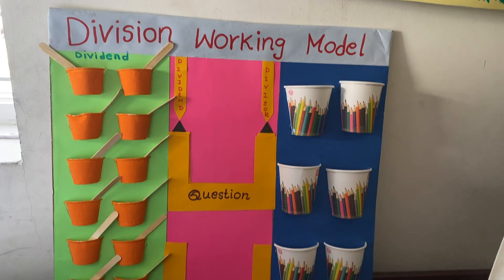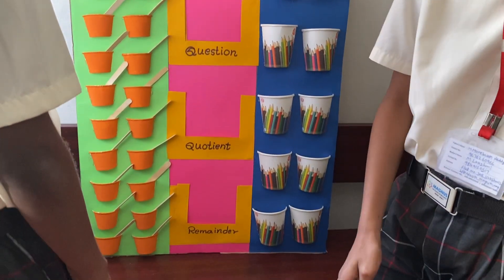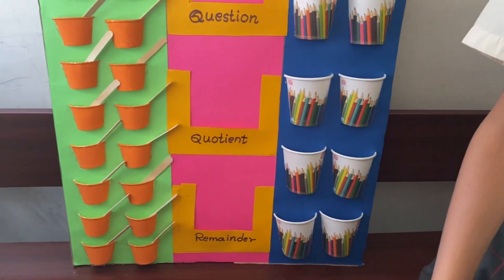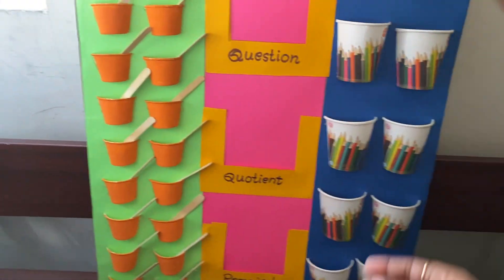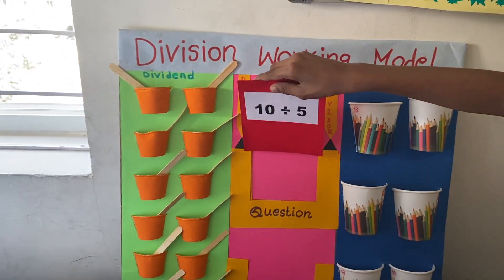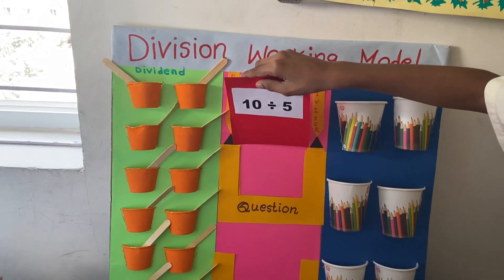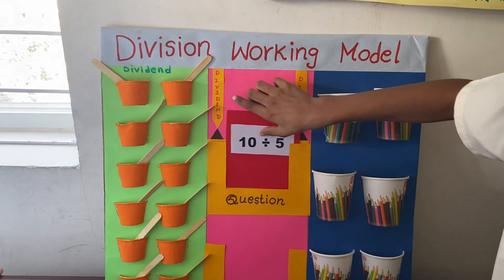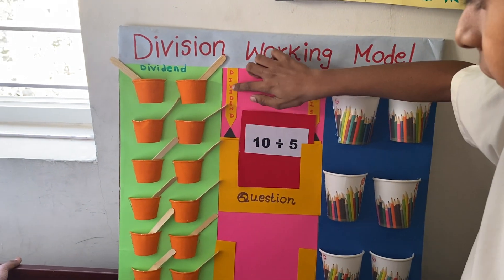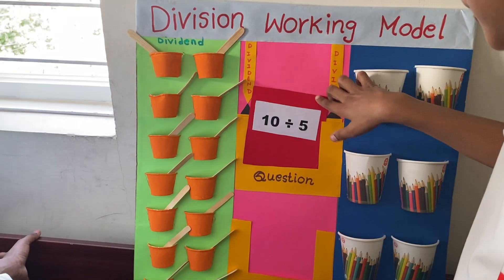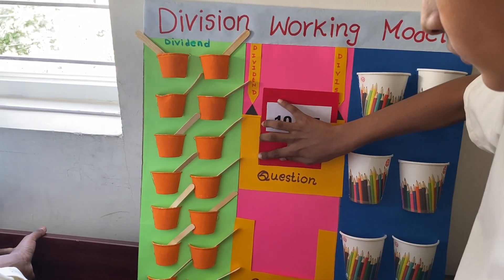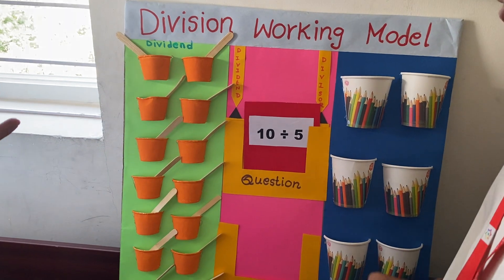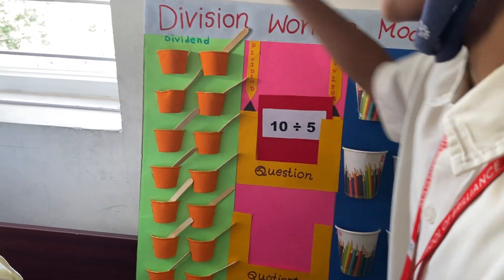Could you please insert the card? Quotient. So, ten is the dividend. Five is the divisor. So, in each cup, you should place five students.